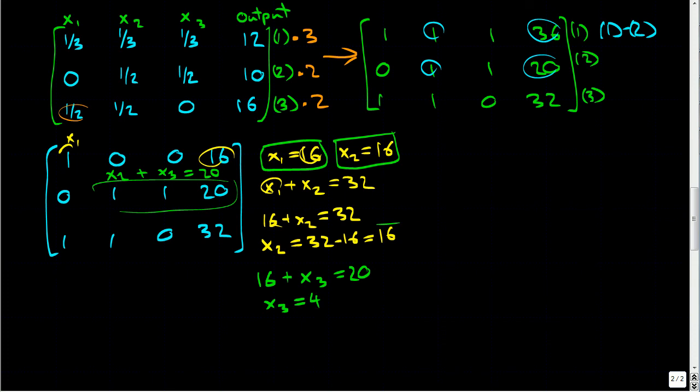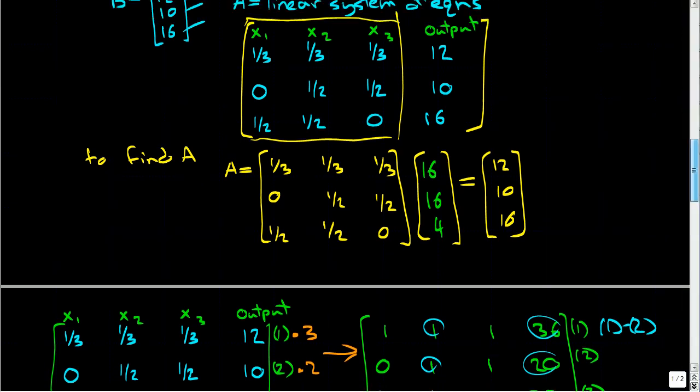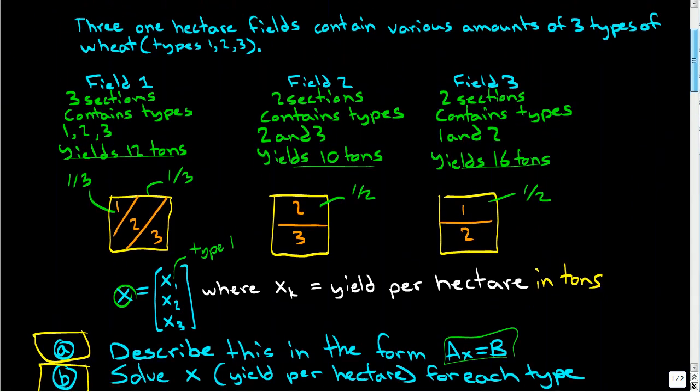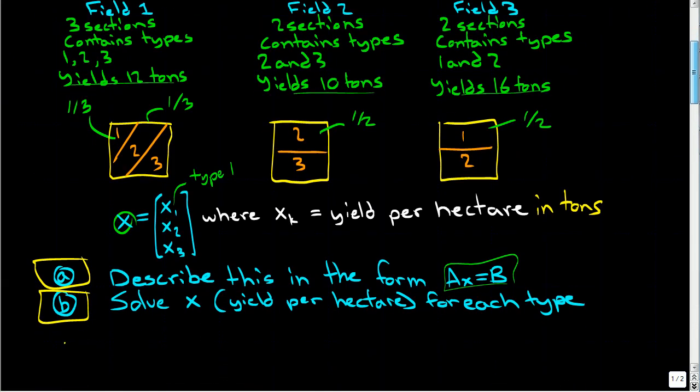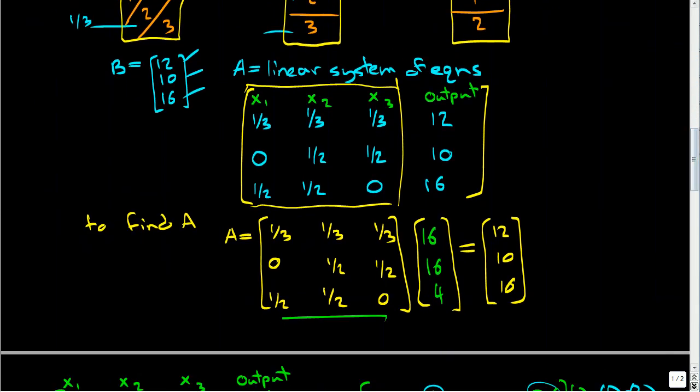So plugging this in, we now know what our A was, we knew what our B was, and now we know what our X is. So we'll just plug in our values for X: sixteen, sixteen, and four. And so this is how we've taken our fields, we've solved it, we've put it into the system of linear equations, we found our A, we knew what our B was because that was our output, and now we can solve for our input simply by solving the system of linear equations.